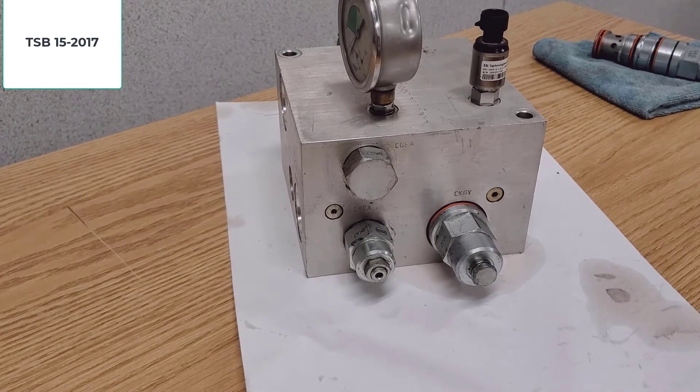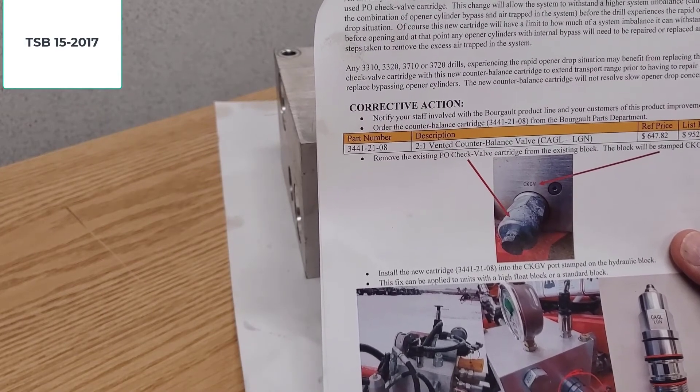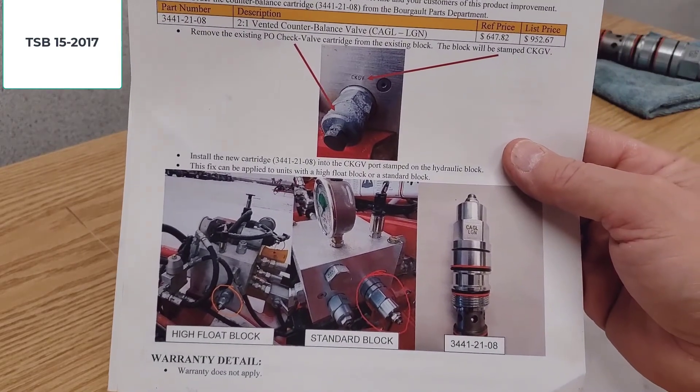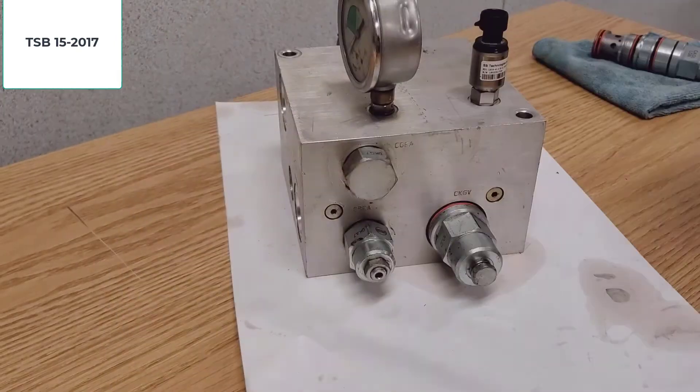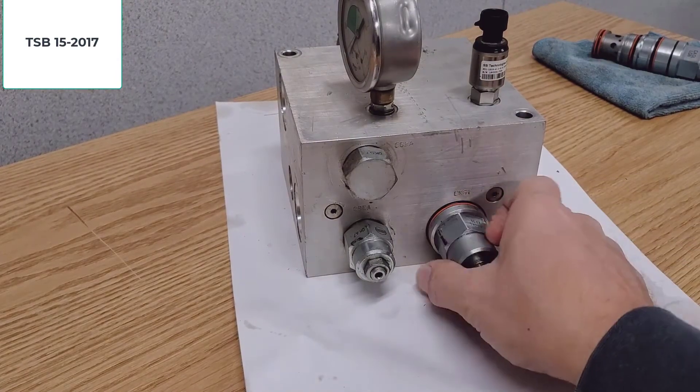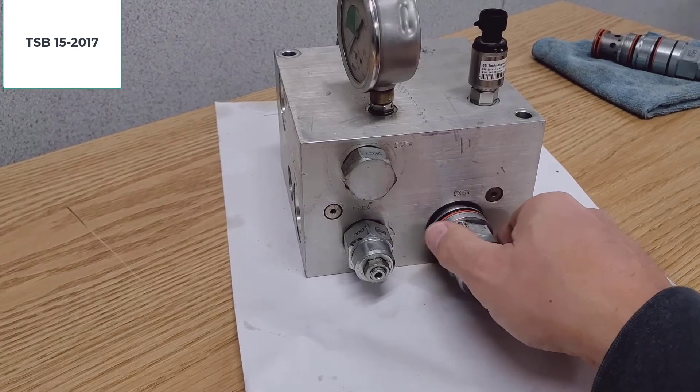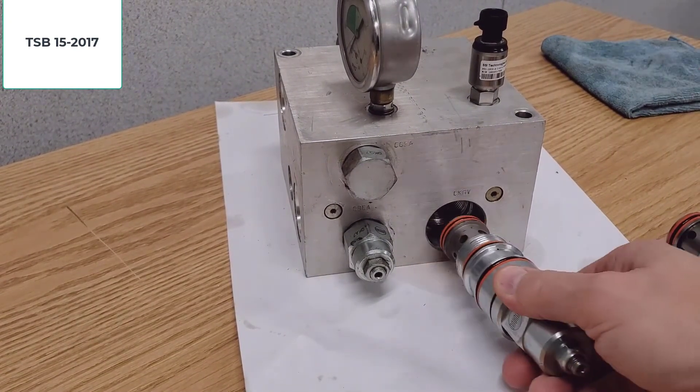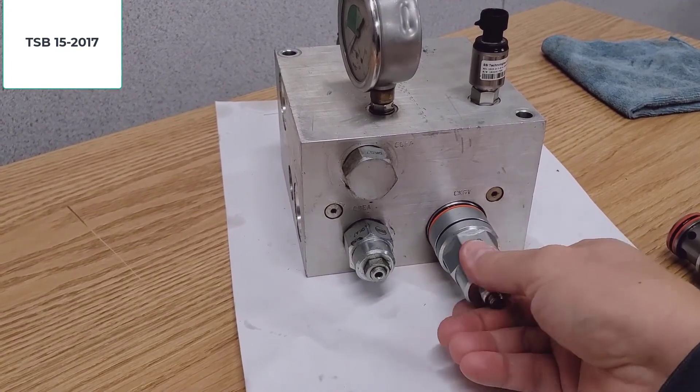And it identifies a valve change. So the CKGV, we changed it to a CAGL valve. So all you had to do is remove this guy and install the new CAGL valve.